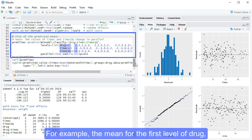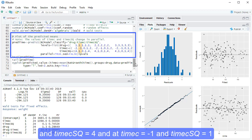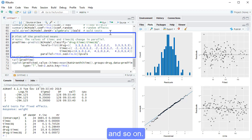For example, the mean for the first level of drug, the control, is being predicted at timec equals negative 2, and timec-squared equals 4, and at timec equals negative 1, and timec-squared equals 1, and so on.